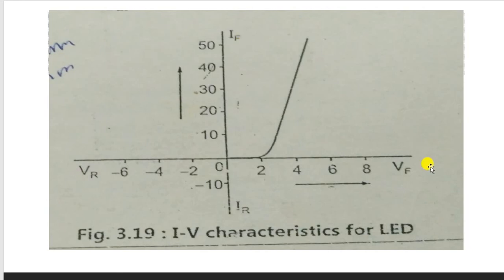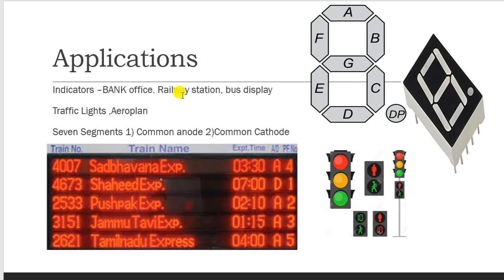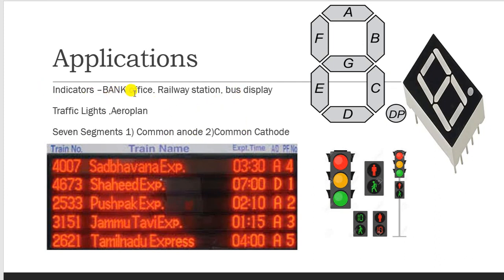The specification parameters of an LED include a current rating of 10 to 15 milliamperes, voltage rating of 2 to 5 volts, and a 330-ohm current-limiting resistor for protection. The LED is typically operated above 2 to 2.5 volts. The IV characteristic shows forward current versus forward voltage. Applications include seven-segment displays for digital watches, traffic light control, dot matrix displays, and use in banks, offices, and railway stations. Seven-segment displays come in two types: common anode and common cathode.